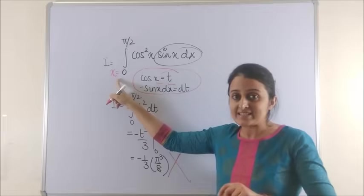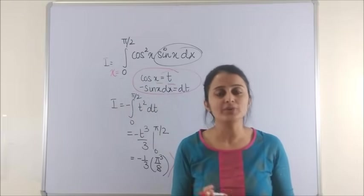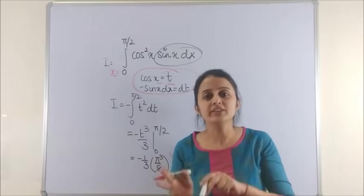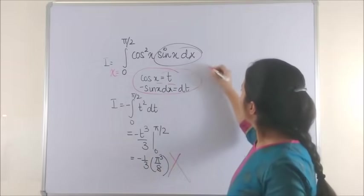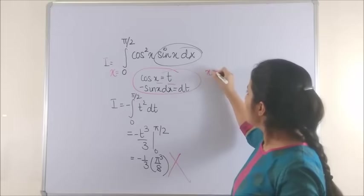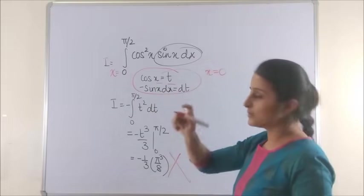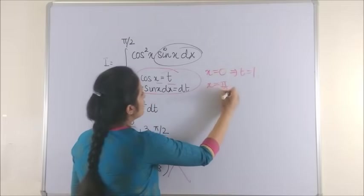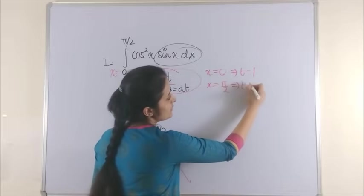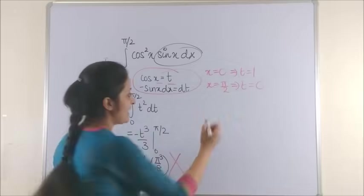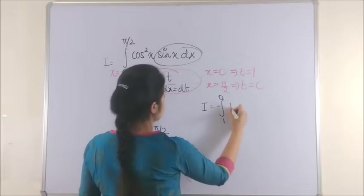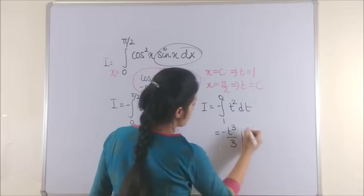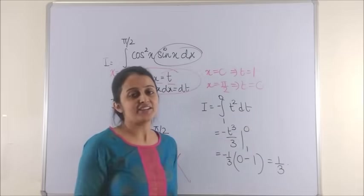So the moment you substitute in a definite integral, it's extremely essential to actually replace your old limits with the new limits. For instance, over here, the moment you put cos x is equal to t, when x is 0, your cos 0 is 1. So this implies t is 1. Similarly, when your x is pi by 2, your t is cos of pi by 2 which gives you 0. So your integral should now be written as minus the new limits 1 to 0 t square dt. So that when you now integrate, your final answer is actually 1 by 3.